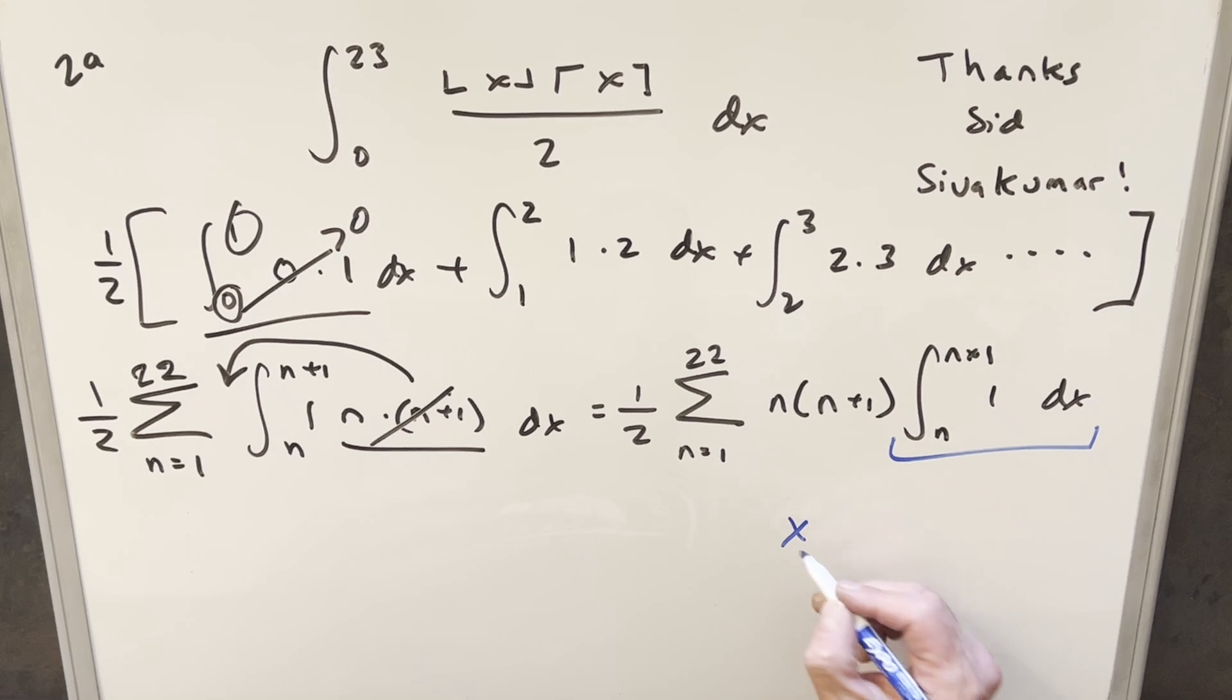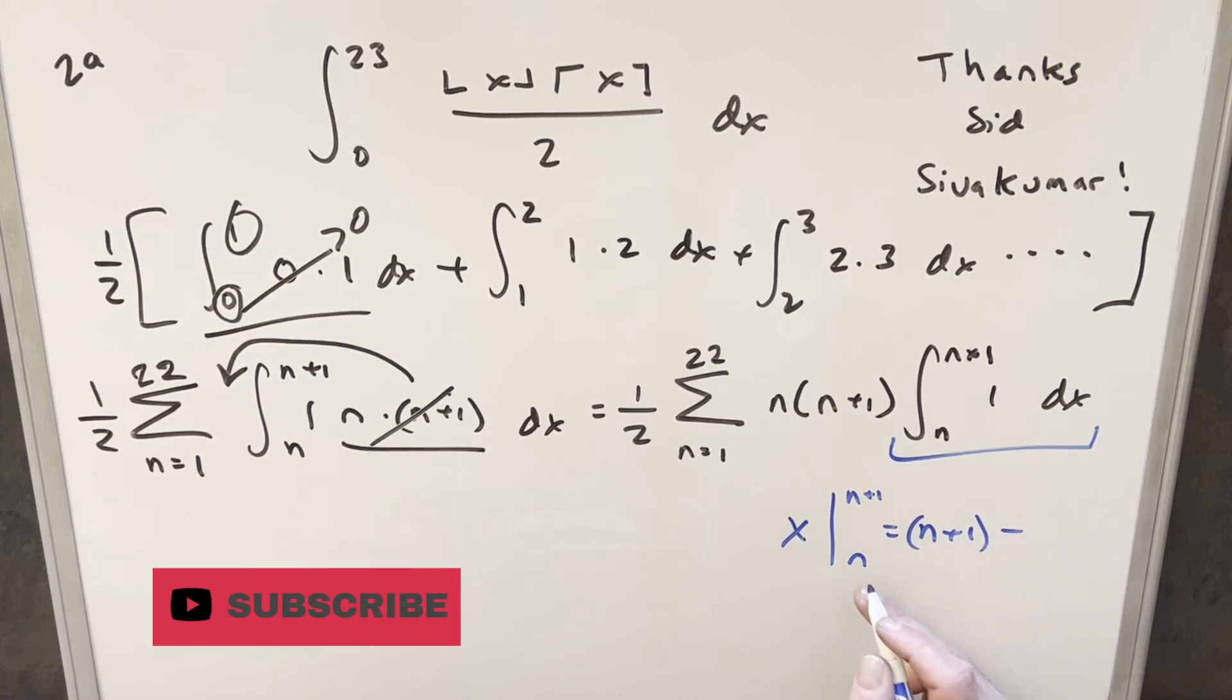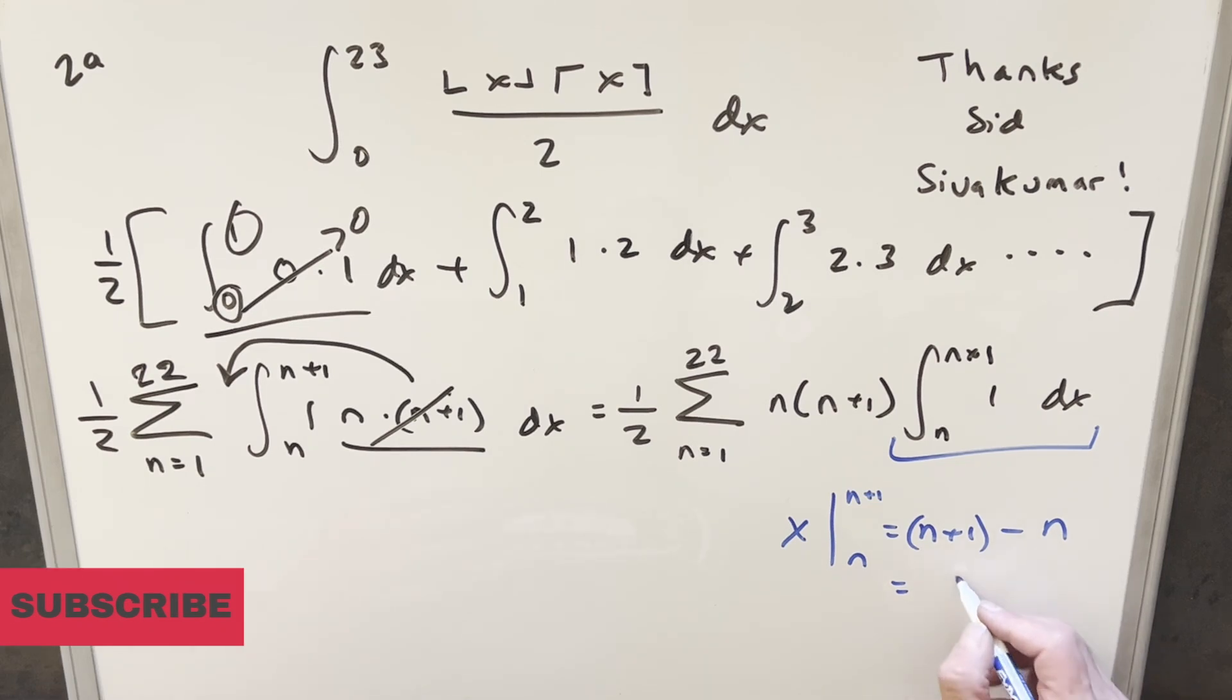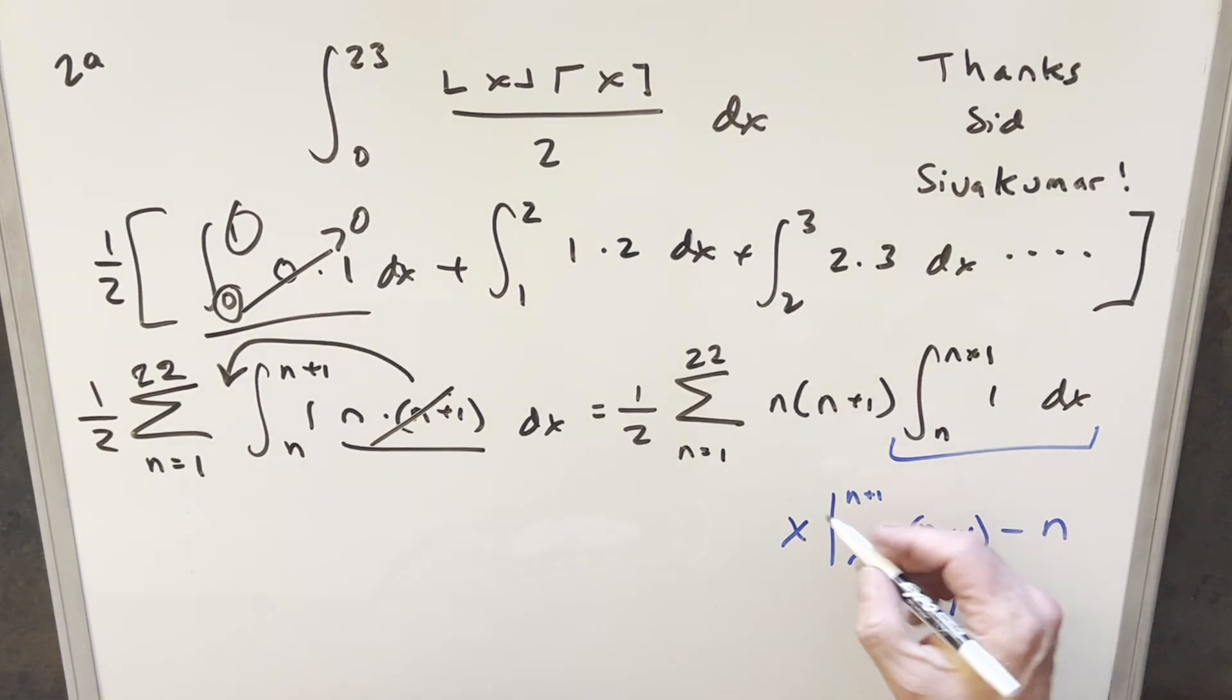But then here we can just go ahead and do this integral and get that out of the way. Integrating 1, this is going to be just an x, and we're evaluating from n to n plus 1. But plug it in, it's going to simplify pretty nice, because the first part's n plus 1, minus the second part's just n. n plus 1 minus n, that leaves me with just 1. But multiplying into 1 right here, we can just cancel this whole part off and just ignore it and deal with this series.